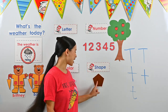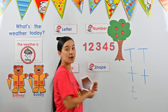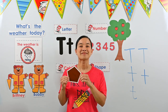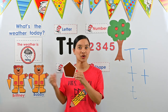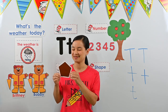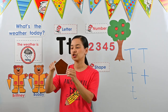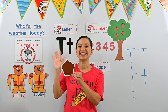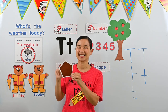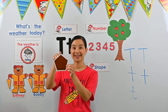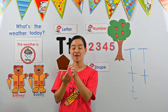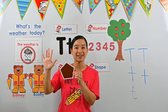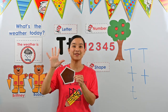Now it's time to move on to our shape of the week. Do you remember what this week's shape is? It's a pentagon. Can you say pentagon? Do you remember how many sides and corners a pentagon has? Let's count the sides: one, two, three, four, five. There are five sides. Now let's count the corners: one, two, three, four, five. A pentagon has five sides and five corners.